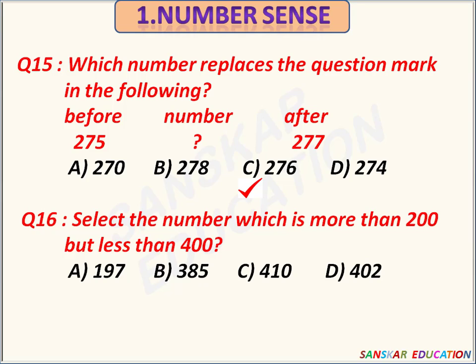Select the number which is more than 200 but less than 400. Options are 197, 385, 410, 402. Number 385 is more than 200 but less than 400. Option B is the correct answer.